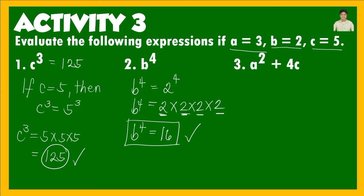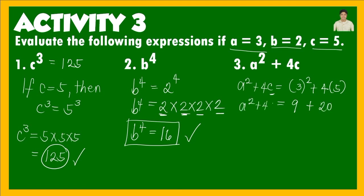For a squared plus 4c, substitute the values: a=3 and c=5. This becomes 3 squared plus 4 times 5. 3 squared is 3 times 3, which equals 9. 4 times 5 equals 20. So a squared plus 4c equals 9 plus 20, which is equal to 29.